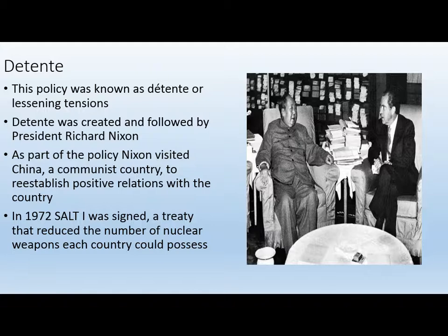In 1972, the Soviet Union realizes it's in a weak place — weakening relations with China, losing its grasp on Eastern European territories. The Soviet Union signs SALT 1, an agreement to reduce the amount of nuclear weapons the USA and the Soviet Union possess. SALT 1 is very successful, signed in 1972, and about ten years later in the 1980s it is followed by SALT 2, which further reduces the number of nuclear weapons in both countries' stockpiles.